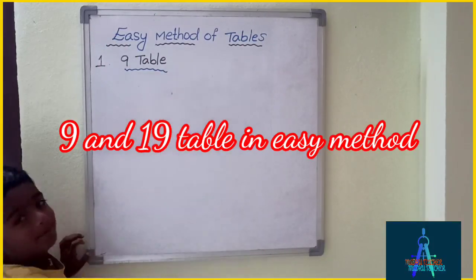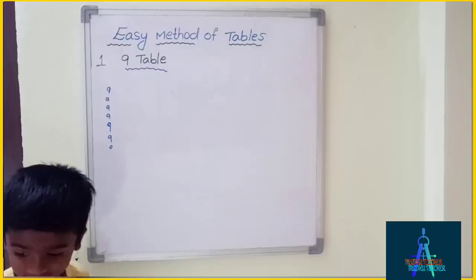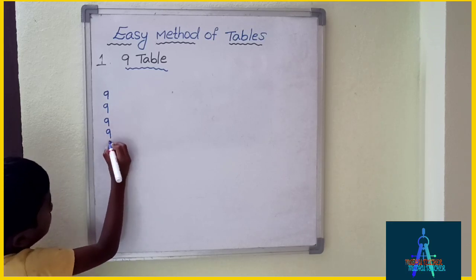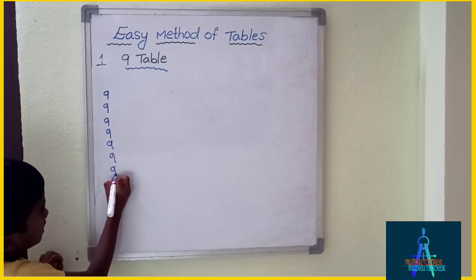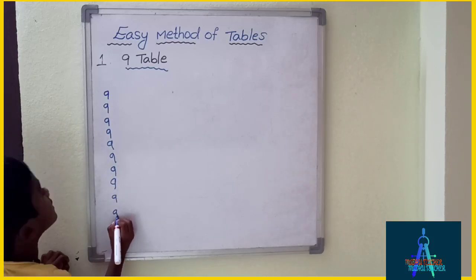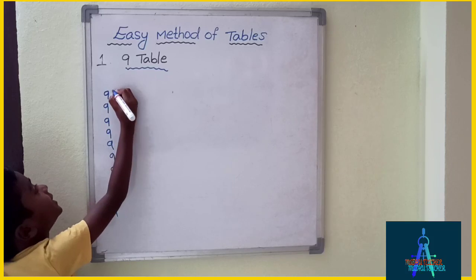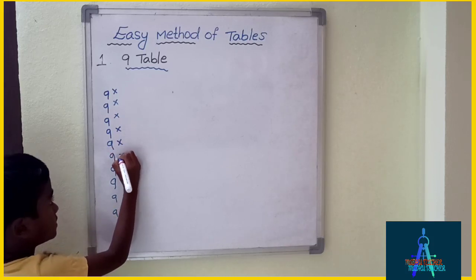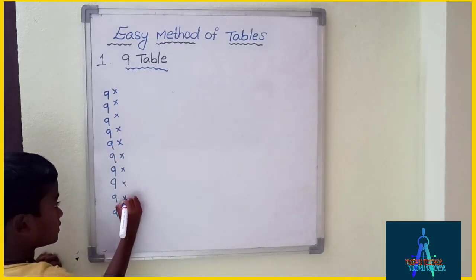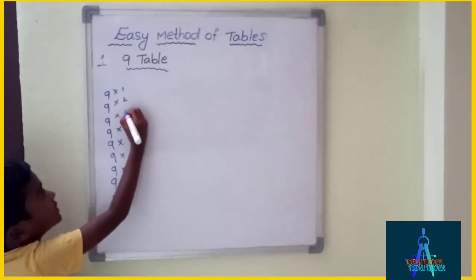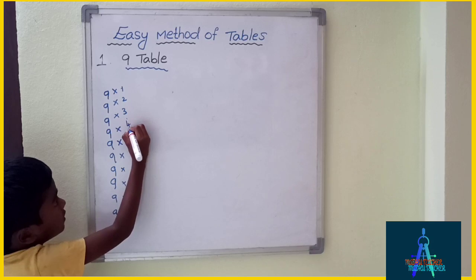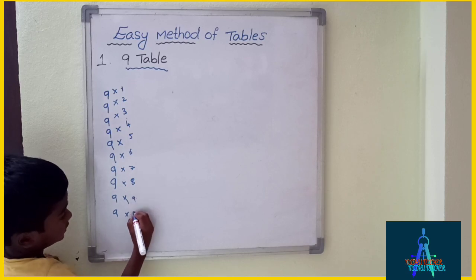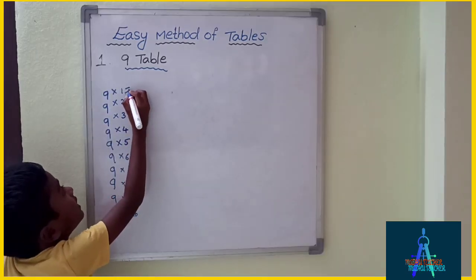Easy method of the 9 times table. First, you write 9 ten times. Write 1 to 10 equal — 10 times.